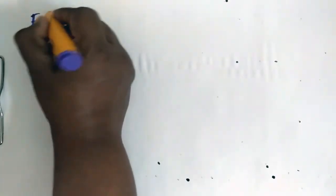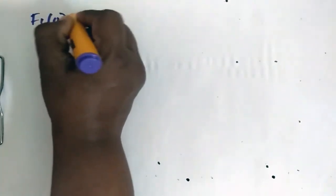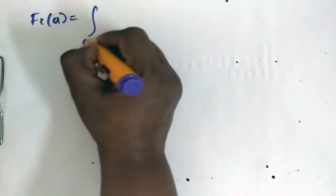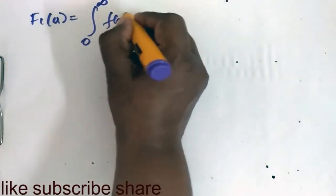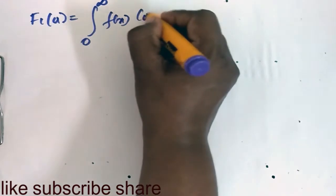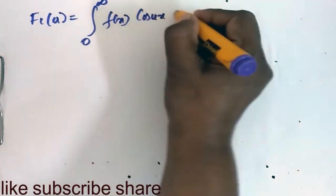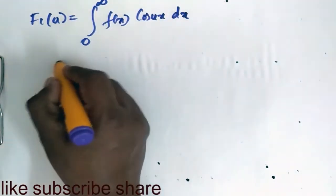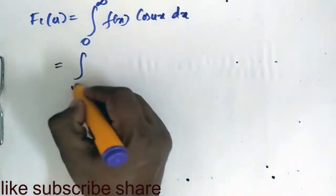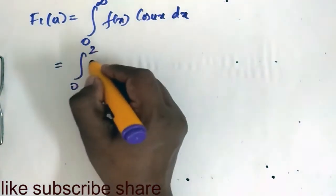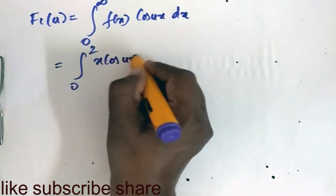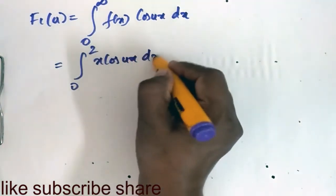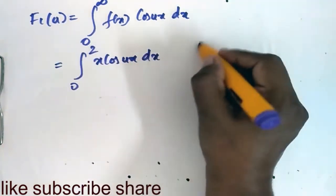For the cosine transform, fc(u) is equal to the integral from 0 to infinity of f(x) cos(ux) dx, which equals the integral from 0 to 2 of x·cos(ux) dx.